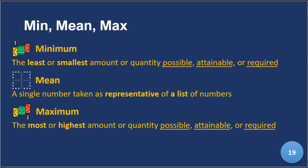Mean is a single number taken as a representative of a list of numbers. In statistics it's called a measure of central tendency. It shows us the average — the average age, the average impression — giving us a sense of a representation of a group of people.